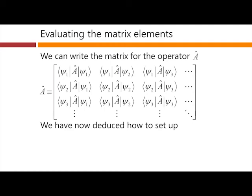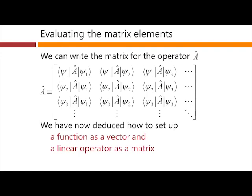So, overall, we've now deduced how to set up a function as a vector and a linear operator as a matrix. And this matrix can operate on the vectors. So now, we've completed our basic setup of how we're going to look at the linear algebra in quantum mechanics.